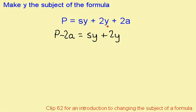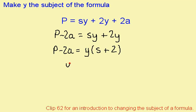The obvious thing to do now is to take out a factor of y. So I have p minus 2a equals — if I take out my factor of y — it leaves me with s here and 2 here. To get y, I'm going to have this divided by this. So y equals p minus 2a divided by s plus 2.